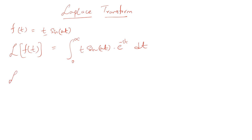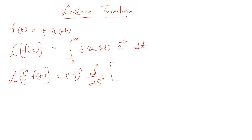The formula is: the Laplace transform of t^n multiplied by a function f(t) equals (−1)^n times the nth derivative with respect to s of F(s), where F(s) is the Laplace transform of the function being multiplied by t^n.